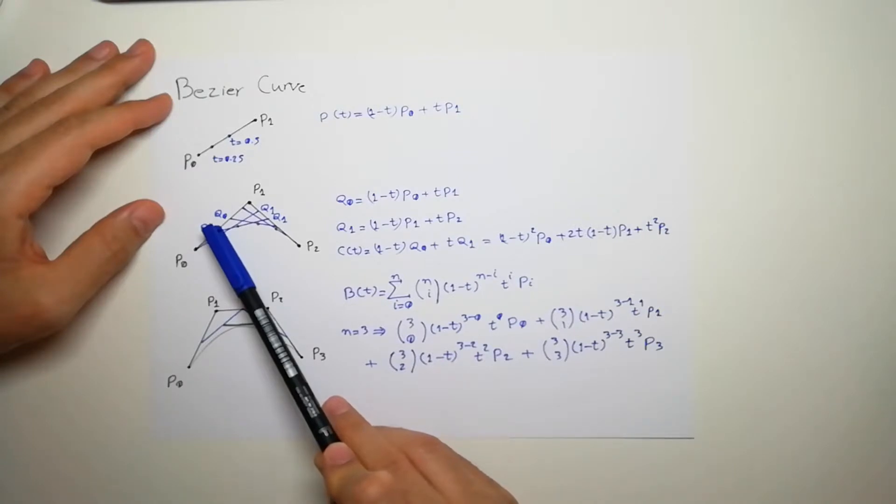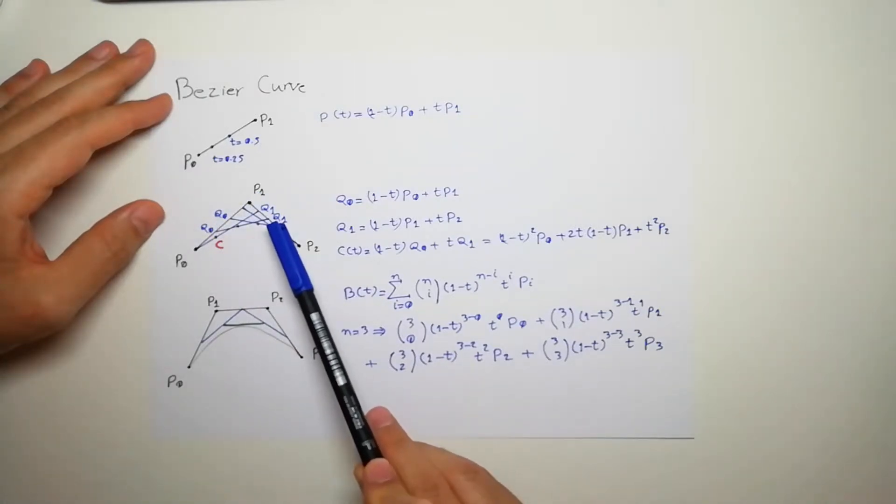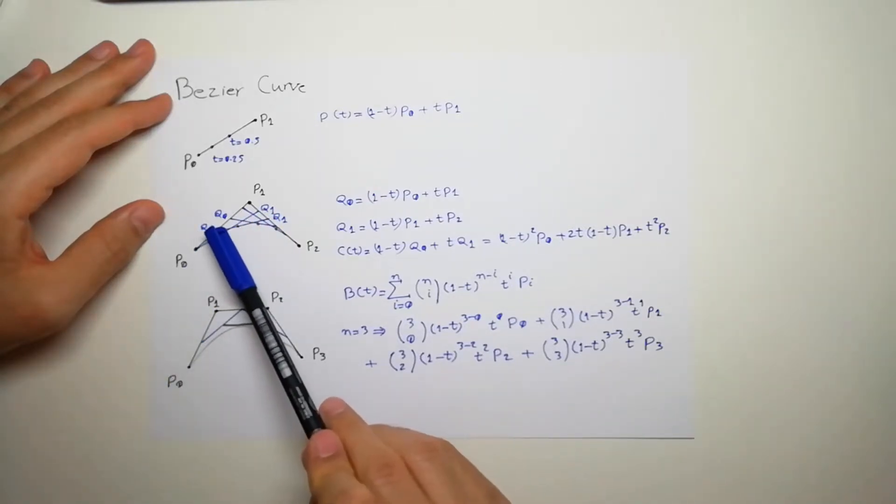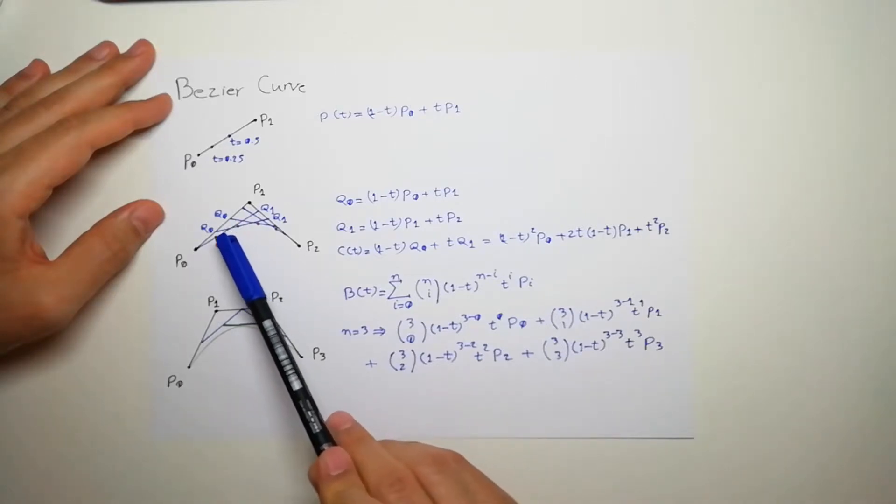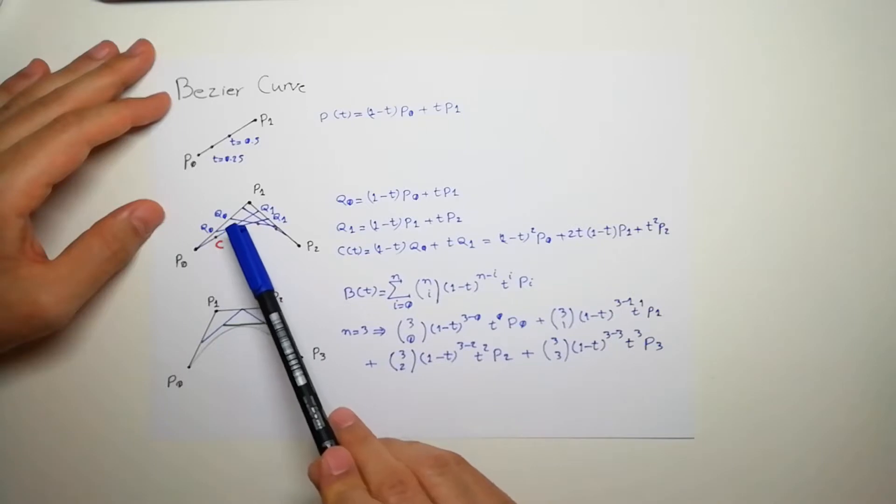Then I will also put the same t here. I'll look at this point and I draw the line between these two and select the point again at 0.3 for the t, and I get this point.